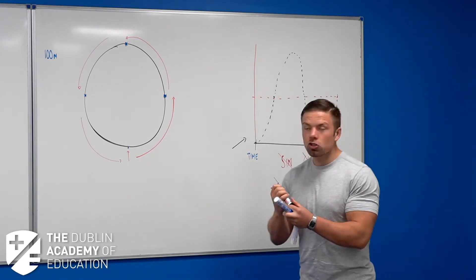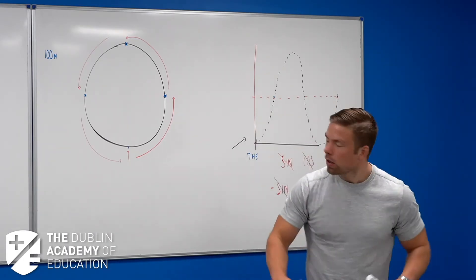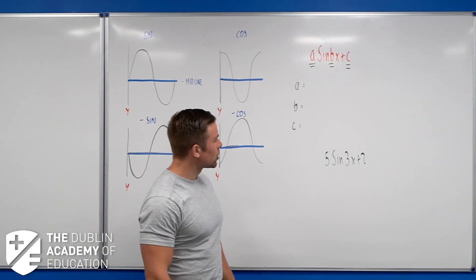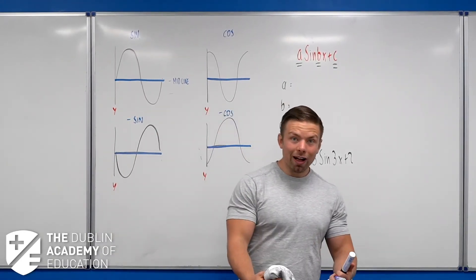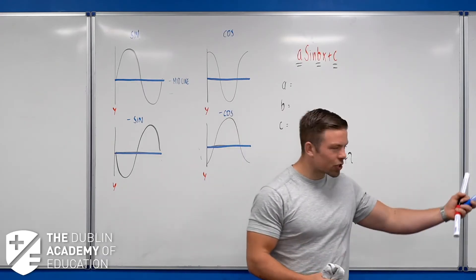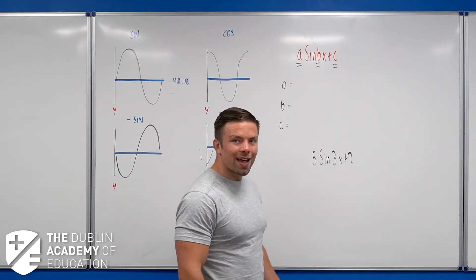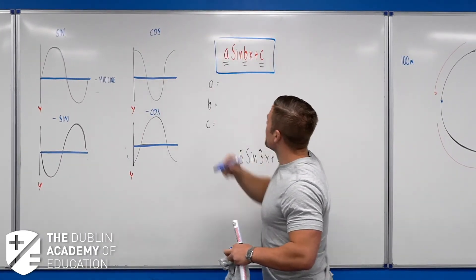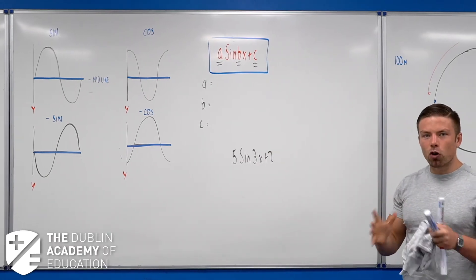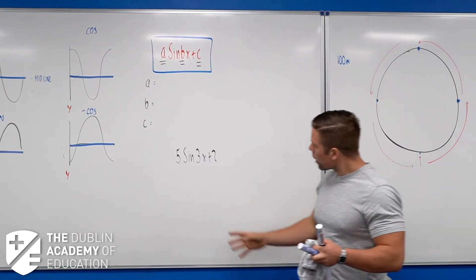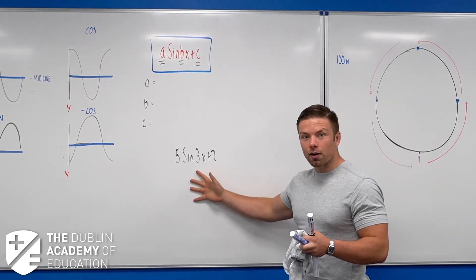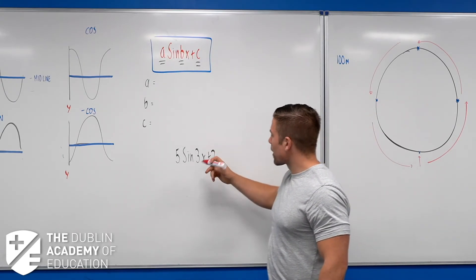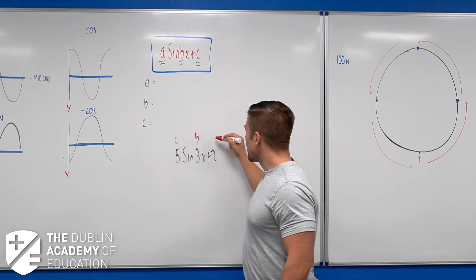So you can look at a graph and tell what it is. As I mentioned in the last class, we have to be able to take something like 5·sin(3x) + 2 and turn it into a graph or sketch, and also take a sketch and turn it back into a function. For me it all comes down to this generic formula: a·sin(b·x) + c.